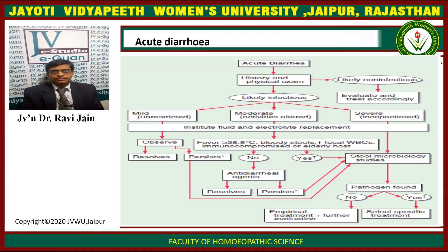Then there are three conditions. Number one: observe and it may automatically resolve. But if it is persistent, then we have to go for stool microbiological studies. If there is fever greater than 38.5 degrees Celsius, increased fecal WBCs, and a compromised host, then if no, give anti-diarrheal agents and it can resolve. If it remains persistent, go for stool microbiology. If the fever is greater and the host is older, then we take stool microbiological studies. After stool microbiological studies, if a pathogen is found, select specific treatment; if no pathogen is found, treat empirically.